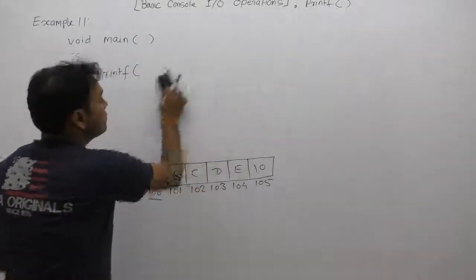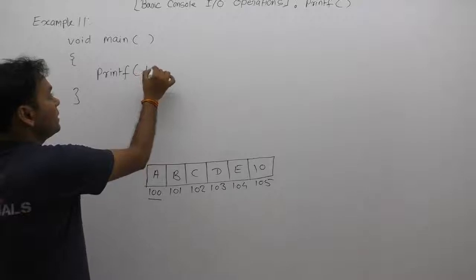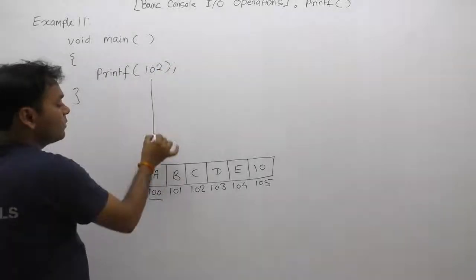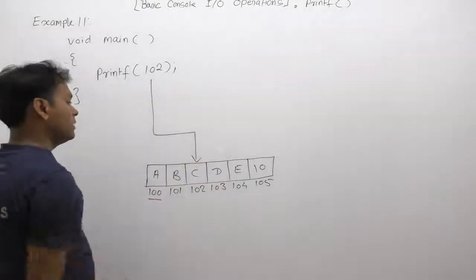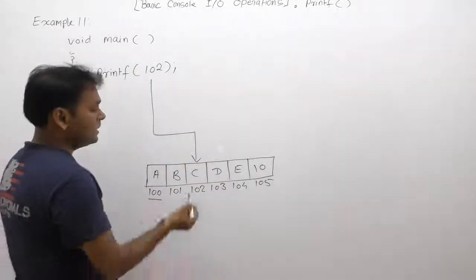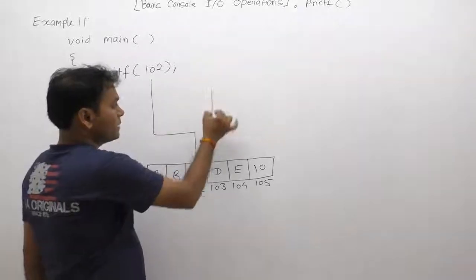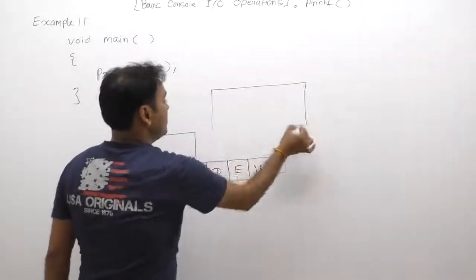Therefore, finally we are supplying here 102, which is the address of C, not A. Therefore, it will read data from the 102 location onwards, one by one. It will read each character.